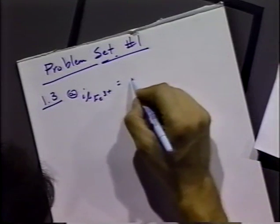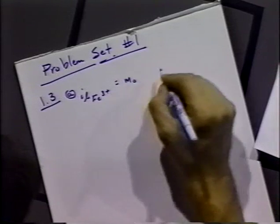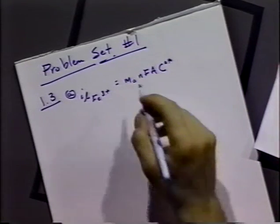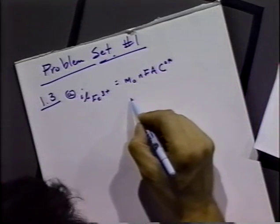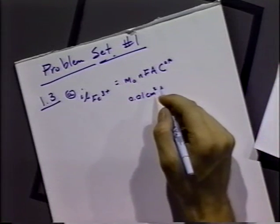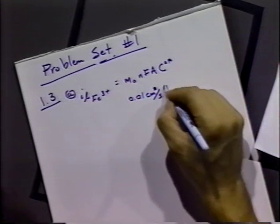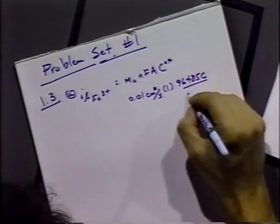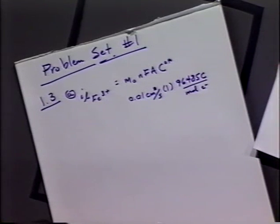That limiting current equals M₀ · n · F · A · C₀*, where all we have to do is put in the relevant parameters. The mass transfer coefficient is 10⁻² centimeters per second. Iron 3+ going to iron 2+ means n equals 1. F is 96,485 coulombs per mole of electrons. The area A is given as 0.3 square centimeters.